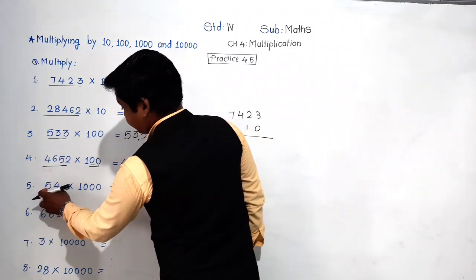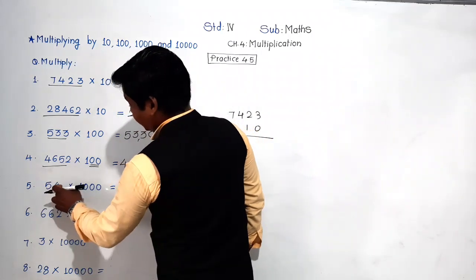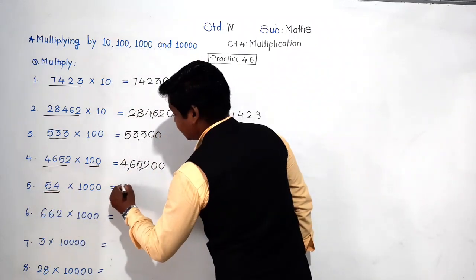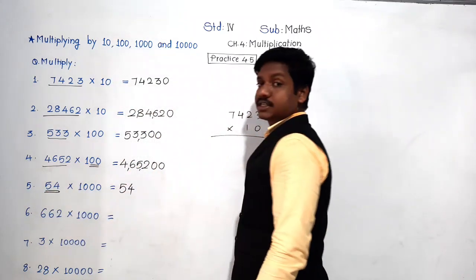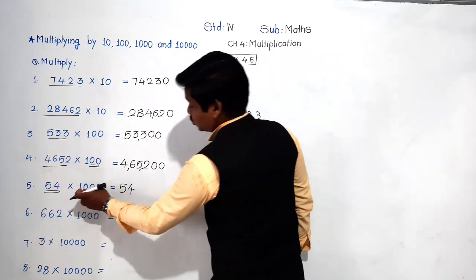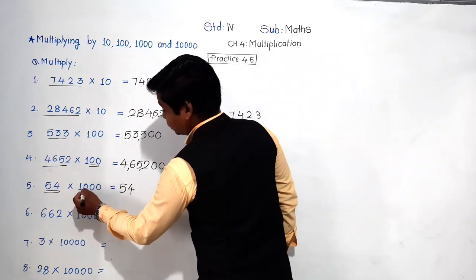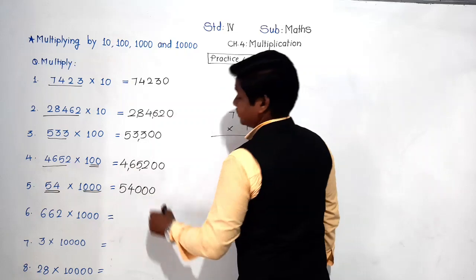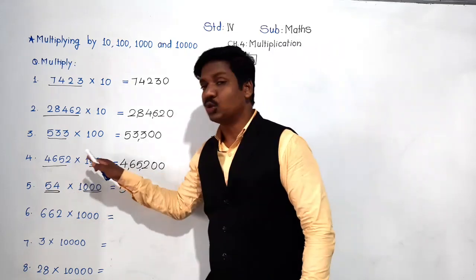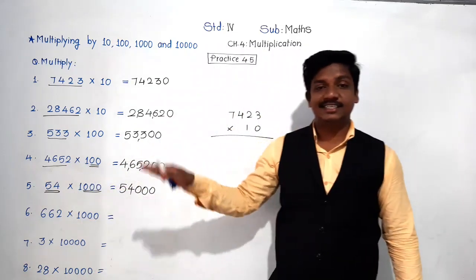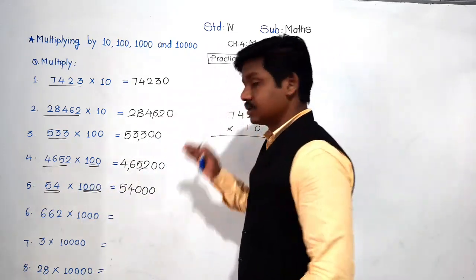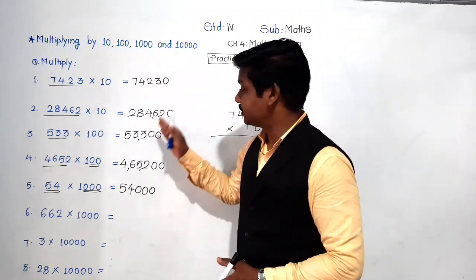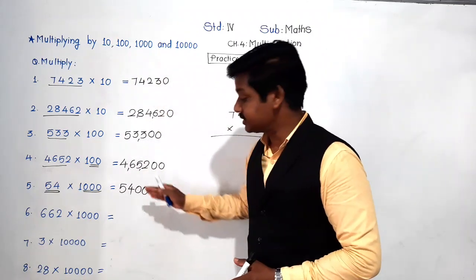Fifth example: 54 into 1000. Write 54 here, and in 1000 there are three zeros — one, two, three. Put those three zeros at the end. So 54 into 1000 equals 54000. We have solved the first five examples. The remaining three examples you will solve as homework.